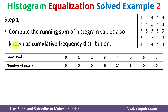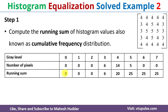In the first step we need to compute the running sum of the histogram values, also known as the cumulative frequency distribution. For gray level 0, the number of pixels is 0 and the previous running sum is 0, so 0 + 0 = 0. Similarly for gray levels 1 and 2, the running sum remains 0.